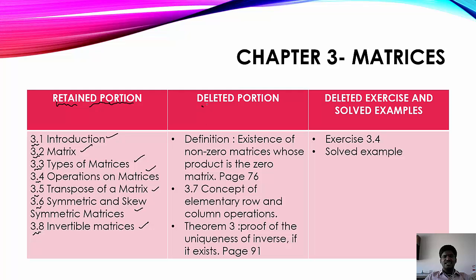The deleted portion in matrices: first, the definition regarding existence of non-zero matrices whose product is the zero matrix — this small subtopic on page number 76 is deleted. Section 3.7, concept of elementary row and column operations, is completely deleted. And Theorem 3 on page number 91 — proof of uniqueness of inverse, if it exists — has also been deleted.